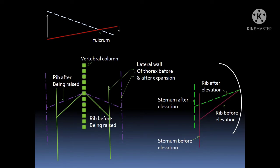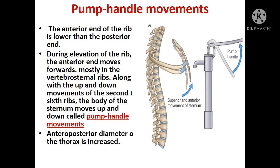During the pump handle movement, the anterior end of the rib is lower than the posterior end. During elevation of the rib, the anterior end moves forward, mostly at the vertebrosternal joints. Along with this movement of the second to sixth ribs, the body of the sternum also moves up and down — this is called the pump handle movement, which increases the anteroposterior diameter of the thorax.